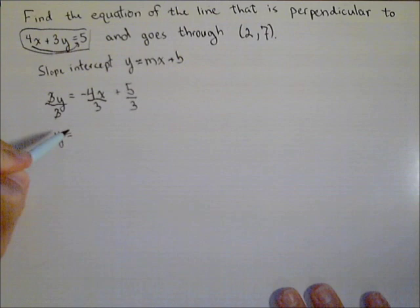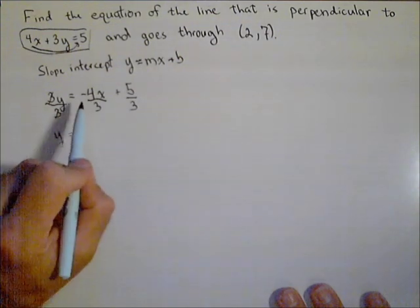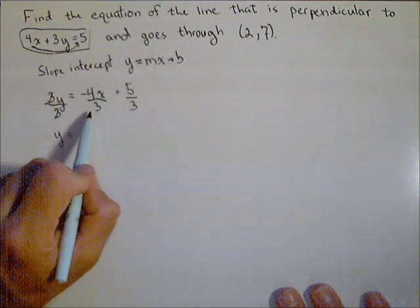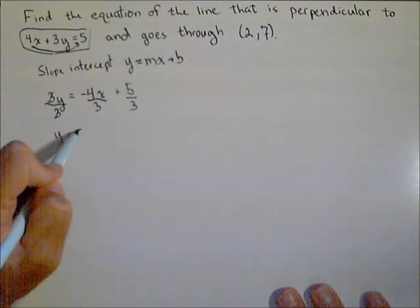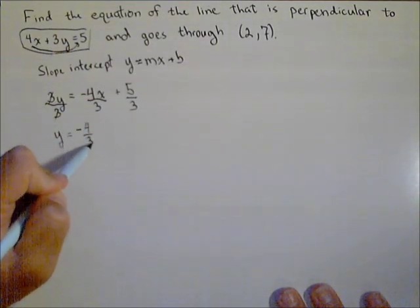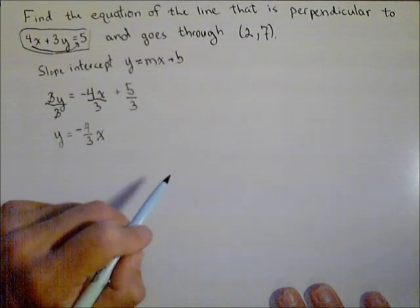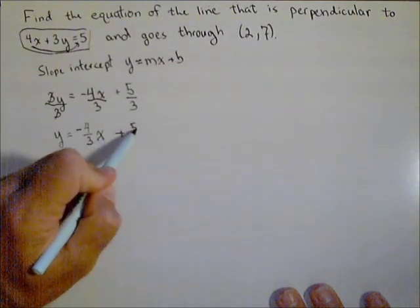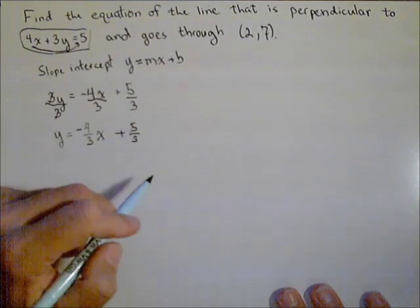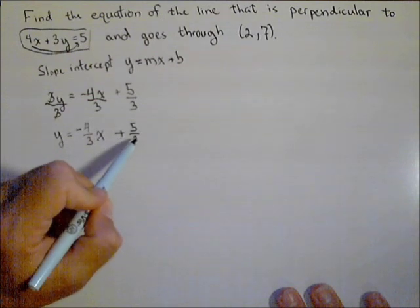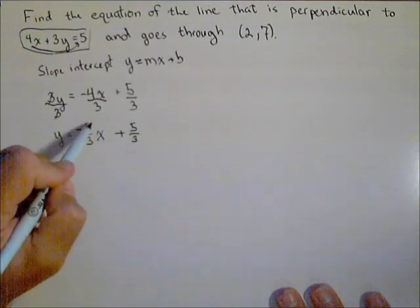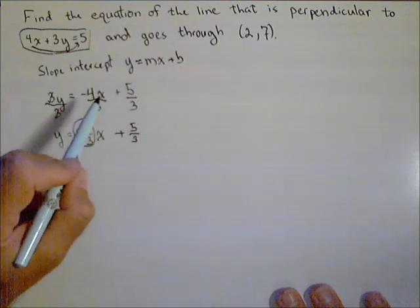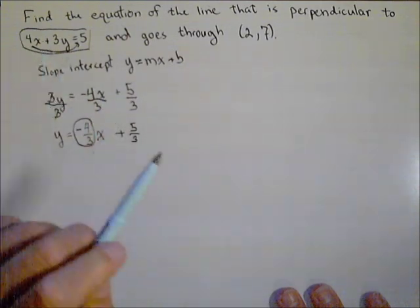Now remember what our goal was, it was just to identify the slope. So we see that this part here is negative 4x over 3. That would be the same thing as writing negative 4 thirds times x plus 5 thirds. We actually, for this particular problem, don't even need to know this y-intercept. Basically all we need is this right here, because that's the slope of our original line.